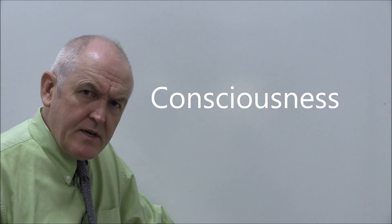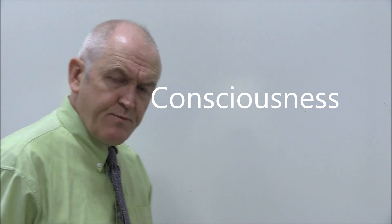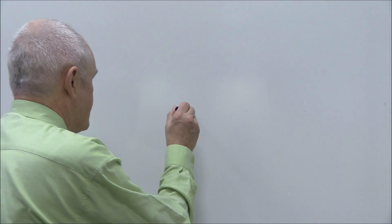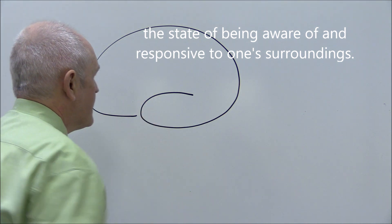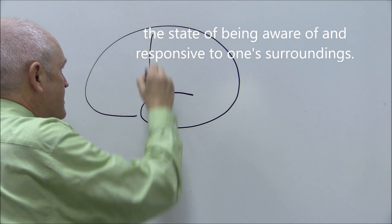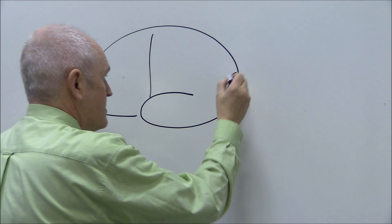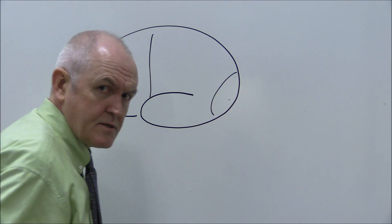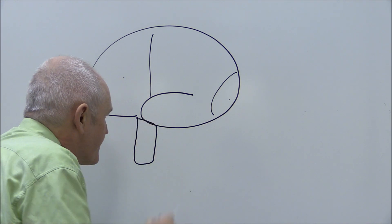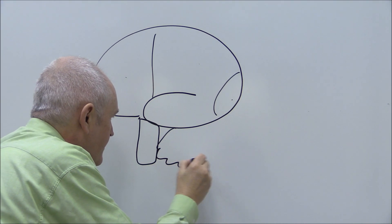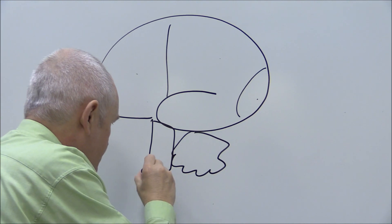What I want to think about now is consciousness. If you've just watched the previous video, you'll know that the brain is divided into lobes: the frontal, parietal, occipital, and temporal lobes. Underneath that we have the brainstem and the cerebellum, the brainstem being continuous with the spinal cord.